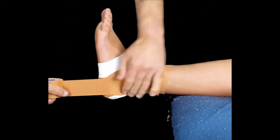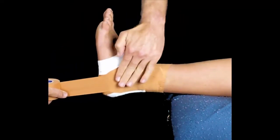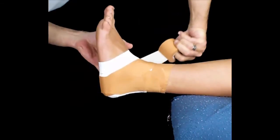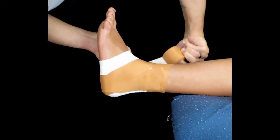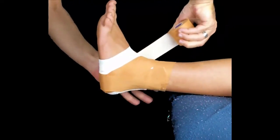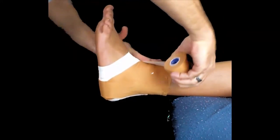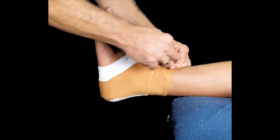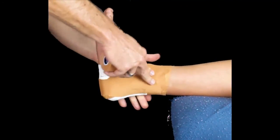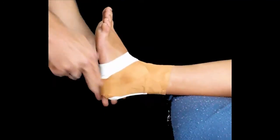Our next figure six starts on the outside and follows the same path as the other one, coming up and around. Let the tape follow. Don't try to force it too much. Just let the tape flow with the shape.